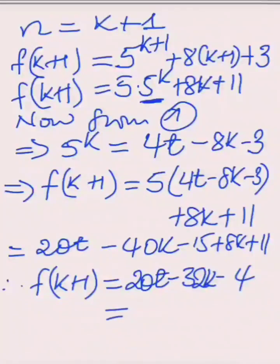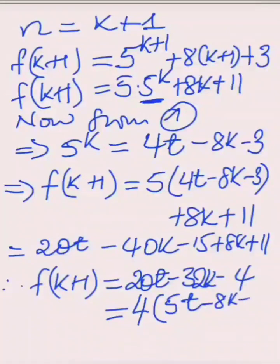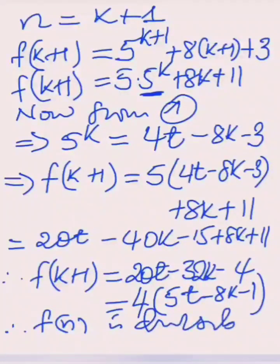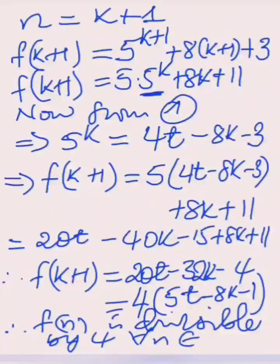We can notice that in all the terms in f of k plus 1, 4 is common. Dividing each of the three terms by 4 I get 4(5t minus 8k minus 1). Since t and k are all positive integers, f of k plus 1 is a multiple of 4. Therefore the statement f of k plus 1 is true. So we conclude that f of n is divisible by 4 for all n element of z plus, the set of positive integers.